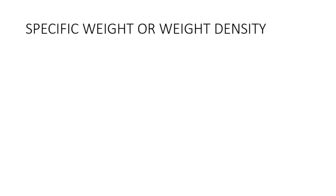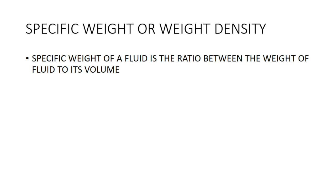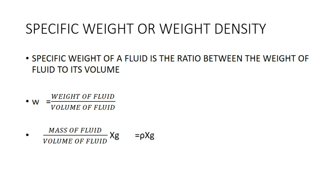Specific weight or weight density. Specific weight of a fluid is defined as the ratio between the weight of the fluid to its volume. Earlier, density or mass density is the ratio between mass of the fluid to its volume. Now in the case of weight density, it is the ratio of weight to its volume, expressed by the small letter w: w equals the weight of the fluid divided by volume of the fluid. We can express specific weight in the form of mass density because weight is the product of mass and acceleration due to gravity. Hence specific weight w equals rho into g.